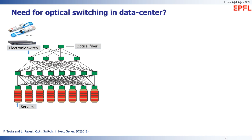I would like to give a short motivation for our work by emphasizing why there is a need for optical circuit switching. The figure shows a multi-tier architecture of a current data center in which different servers are interconnected with electronic switches and optical fiber. The data is converted from electrical to optical domain and back using small devices known as optical transceivers, which are power hungry and consume a lot of power.